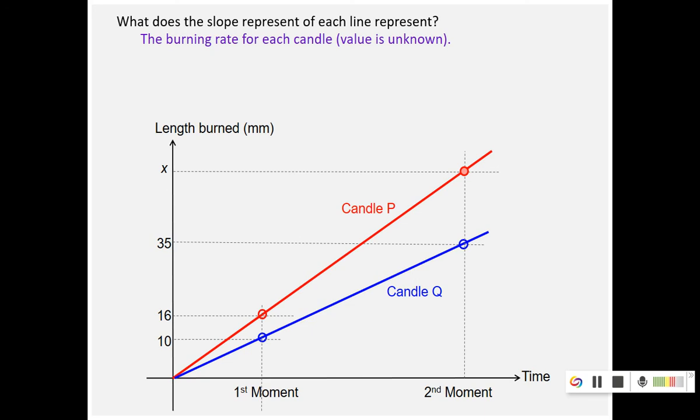The answer is that we can't. The reason is because from the time it was lit to the first moment, the number of seconds or the number of minutes, the time is not given to us. Nevertheless, we can represent the time by T1. So T1 in this case is an unknown. Then the burning rate for candle Q is 10 over T1. And the burning rate for candle P is 16 over T1. Does it help? So each of them is a burning rate, but because the T1 value is unknown, so we don't know the burning rate as yet.